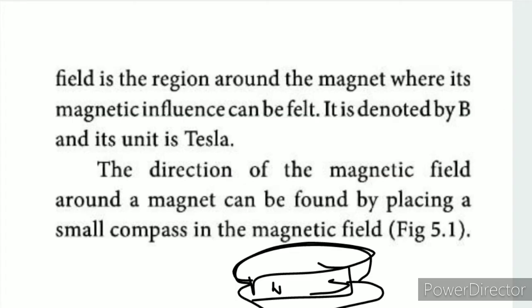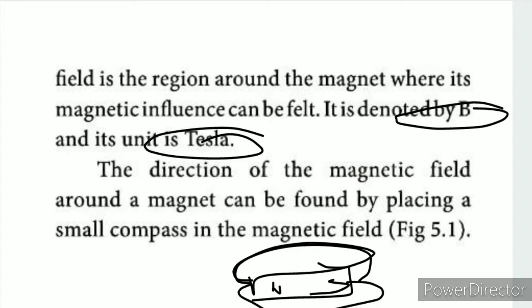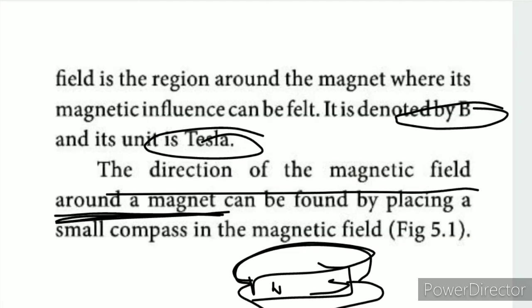Magnetic field is denoted by B. The unit of magnetic field is Tesla. The magnetic field shows the influence and power of the magnet around it. The direction of the magnetic field can be found by placing a small compass in the magnetic field — the compass needle points in the direction of the field.